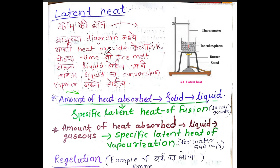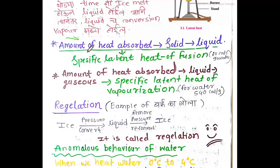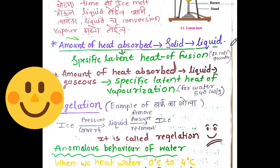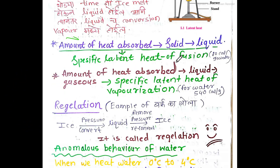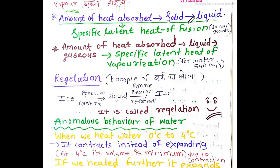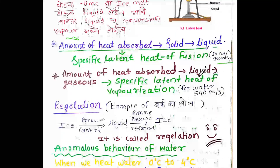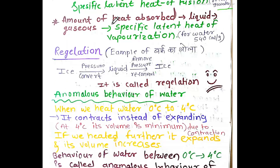First it is solid to liquid, then liquid to vapor. The amount of heat absorbed by a solid to convert into liquid is called the specific latent heat of fusion. For water, the latent heat of fusion is 80 calories per gram.